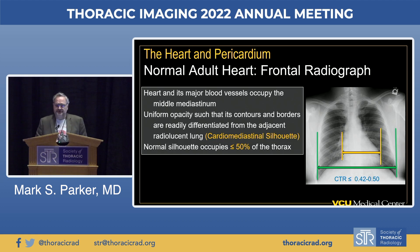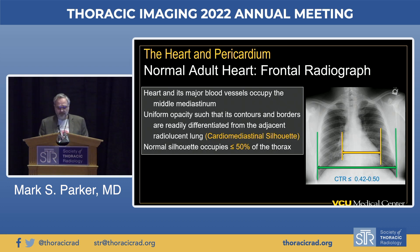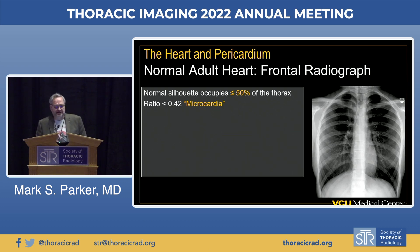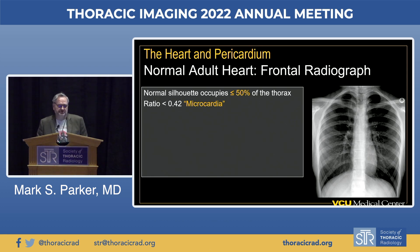The normal cardiothoracic ratio ranges between less than or equal to 0.42 to 0.50. Most often with hospitalized and ICU patients, we're dealing with a big cardiothoracic ratio. But on occasion, you'll encounter a patient with a very small cardiothoracic ratio. If that ratio is less than 0.42, you have a diagnosis of microcardia, and you need to know the differential diagnosis for that entity.